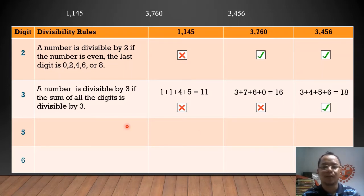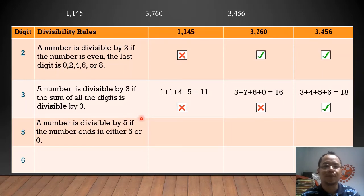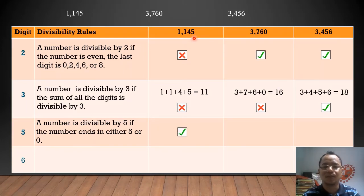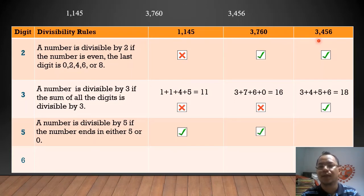How can we identify if a number is divisible by 5? A number is divisible by 5 if the number ends in either 5 or 0. In 1,145, the last digit is 5. Therefore, it is divisible by 5. Next, 3,760 — the last digit is 0. Therefore, it is divisible by 5. Next, 3,456 ends with 6, so it is not divisible by 5.